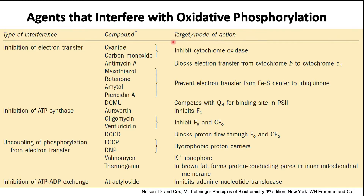Let's go through them one by one. This table lists the following poisons according to their mechanisms of action: inhibition of electron transfer, inhibition of ATP synthase, uncoupling of phosphorylation from electron transfer, and inhibition of ATP-ADP exchange. Feel free to pause the presentation to take a longer look at the different agents and their mechanisms of action.